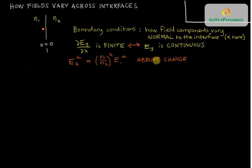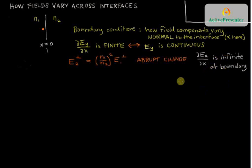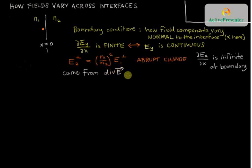When we say it has an abrupt change, mathematically that means that the derivative of Ex, the perpendicular component, with respect to x is infinite at the boundary. So it's not surprising that we learned something about dEx/dx at the boundary when we analyzed the perpendicular component, because that came from analyzing the divergence of the electric field at the boundary. That's the Maxwell equation we analyzed, and the divergence of E mathematically has dEx/dx in it.